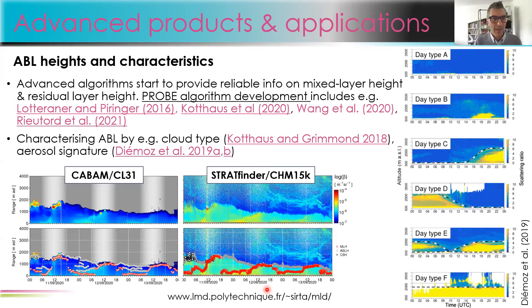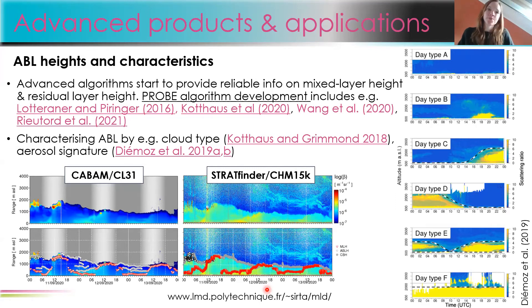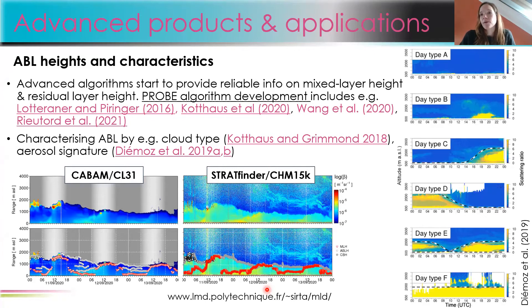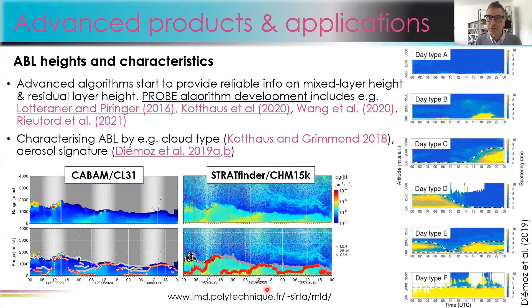There are two questions on the pad. The first from Marcus: how reliable are derived cloud-base heights in the upper troposphere and lower stratosphere compared to the ABL? The closer you are to the ground, the better the signal. Detection of water clouds close to the boundary layer is very good; cirrus cloud detection is also possible and depends on system power, improving with advances in ALC technology. Other questions from Joel and Emiliano can be addressed at the end or answered on the pad.